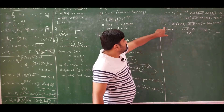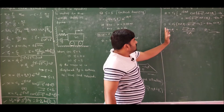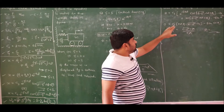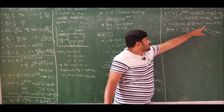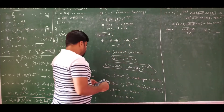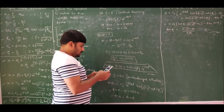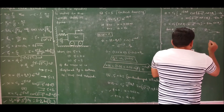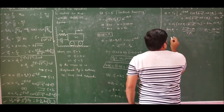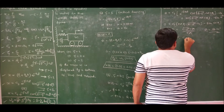Therefore, tan(φ1) = √(1−ζ²) / ζ. With ζ = 0.3: φ1 = tan⁻¹(√(1−0.3²) / 0.3) = tan⁻¹(√0.91 / 0.3), giving φ1 = 72.54 degrees. From equation 1, c3 = 0.03 / sin(φ1) = 0.03 / sin(72.54°) = 0.0314.